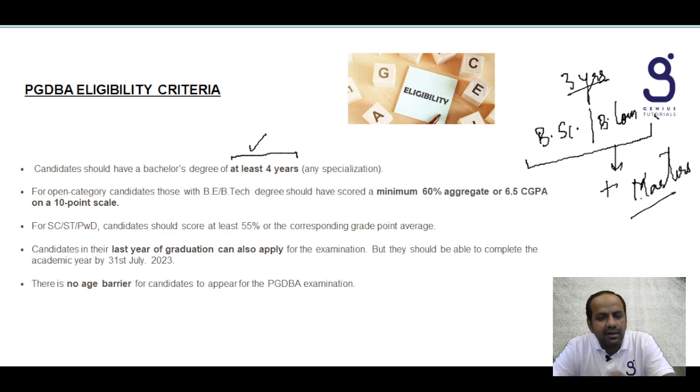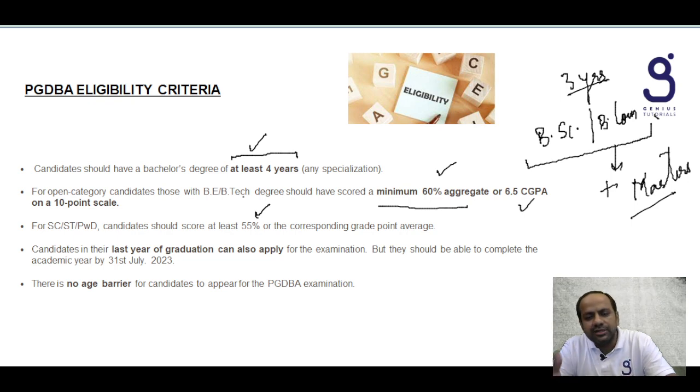If you have graduation degree of three years but you have done masters after that, then you can be eligible for this PGDBA exam. For marks weightage, minimum marks required for open category is 60% in your graduation or 6.5 CGPA on a 10-point scale. For SC, ST, and PWD category, the marks required are 55%. Final year students can also apply but they have to complete their degree by end of July 2023. There is no age barrier for appearing in this PGDBA exam.